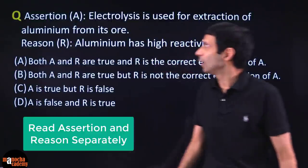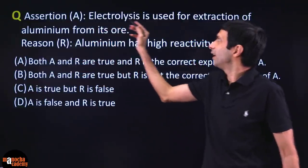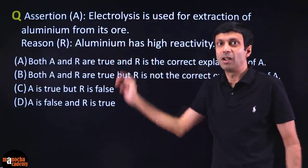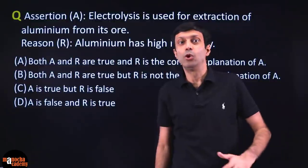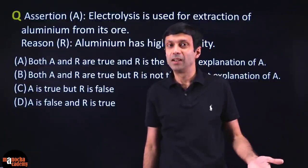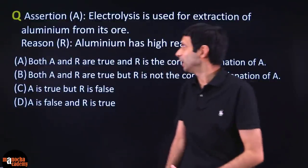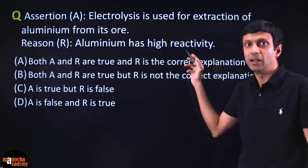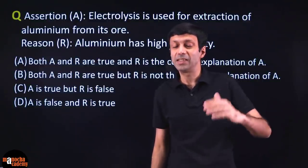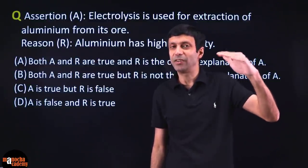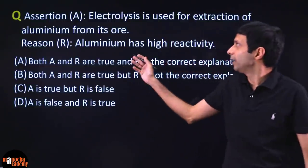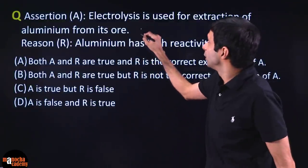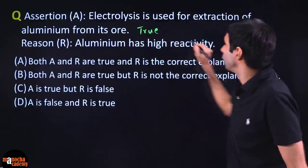The assertion is: electrolysis is used for extraction of aluminum from its ore — and we know that's true. We do electrolysis of aluminum oxide to get aluminum. The reason is: aluminum has high reactivity. If you think about the reactivity series, aluminum is pretty high on it. So the reason is also true. Both assertion and reason are true.